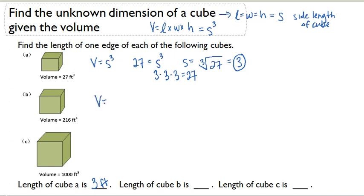For part B, I'm going to do the same thing. V equals S cubed. So I'm looking for a number that multiplied by itself two times gives me 216. Or I can simply say S equals the cubed root of 216. And the cubed root of 216 is 6. So the length of cube B is 6 feet.